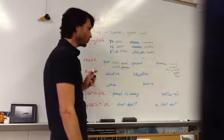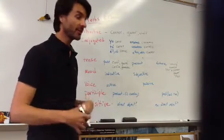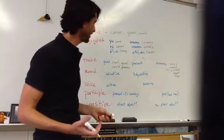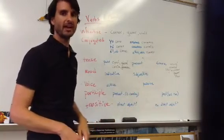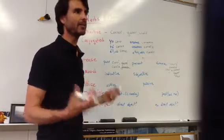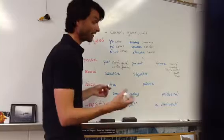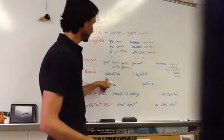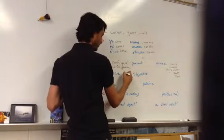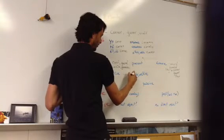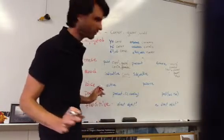We also have mood: we have indicative mood, which is saying how things really are, and we have subjunctive mood, which is how we feel about things, how we wish things were, how we hope things will be, or how things might be in the future. Indicative is solid — yo corro — it's a statement of fact.